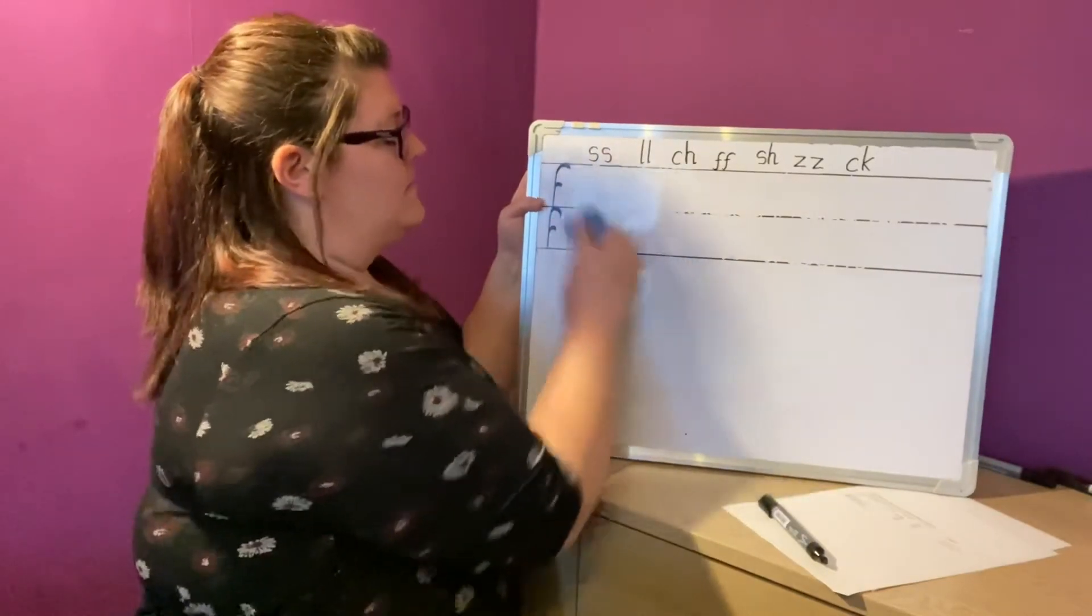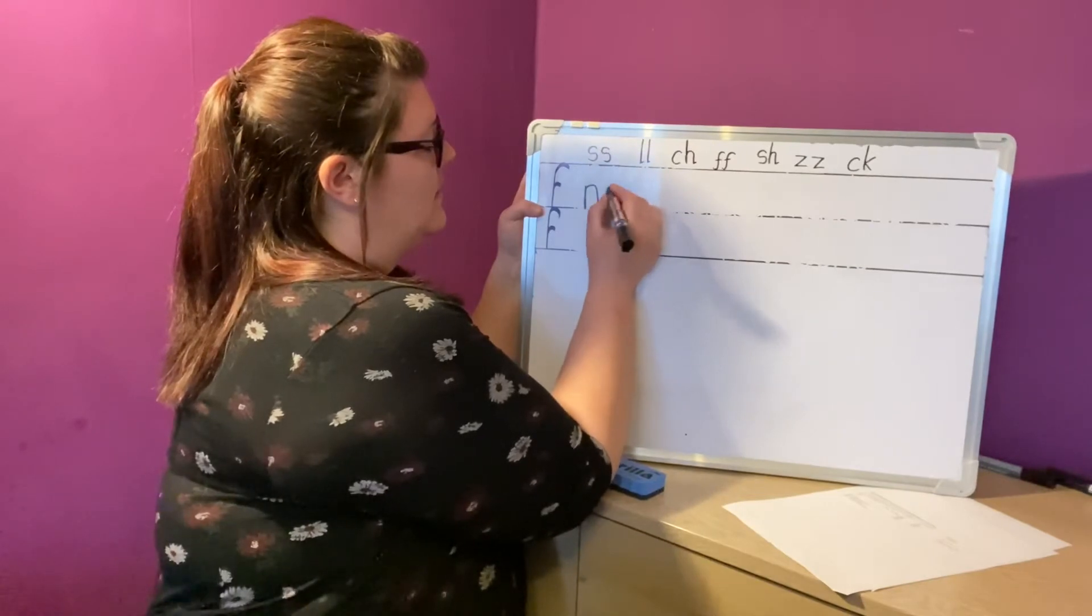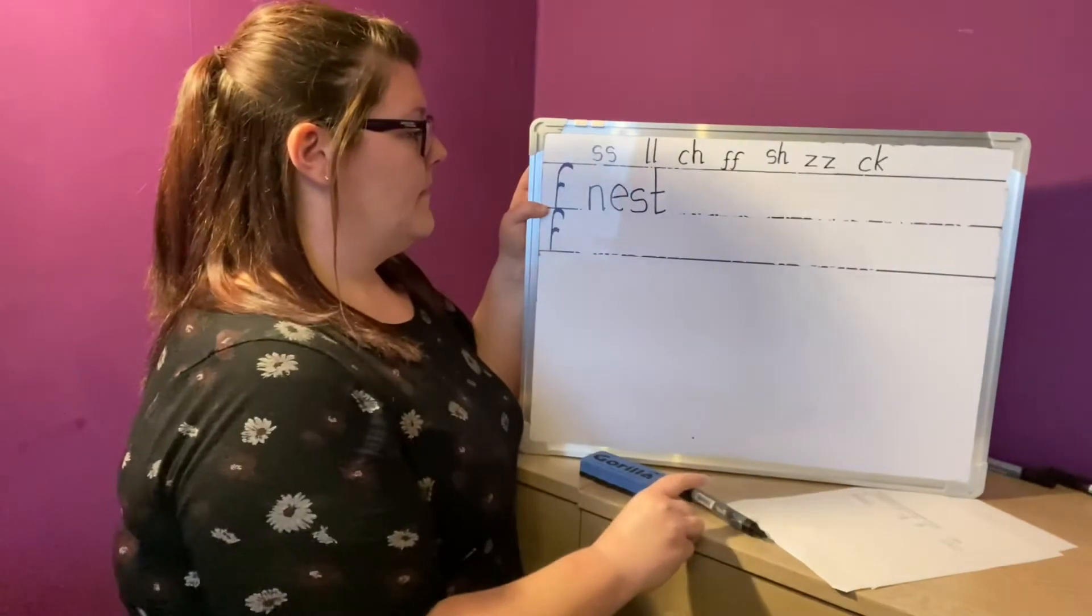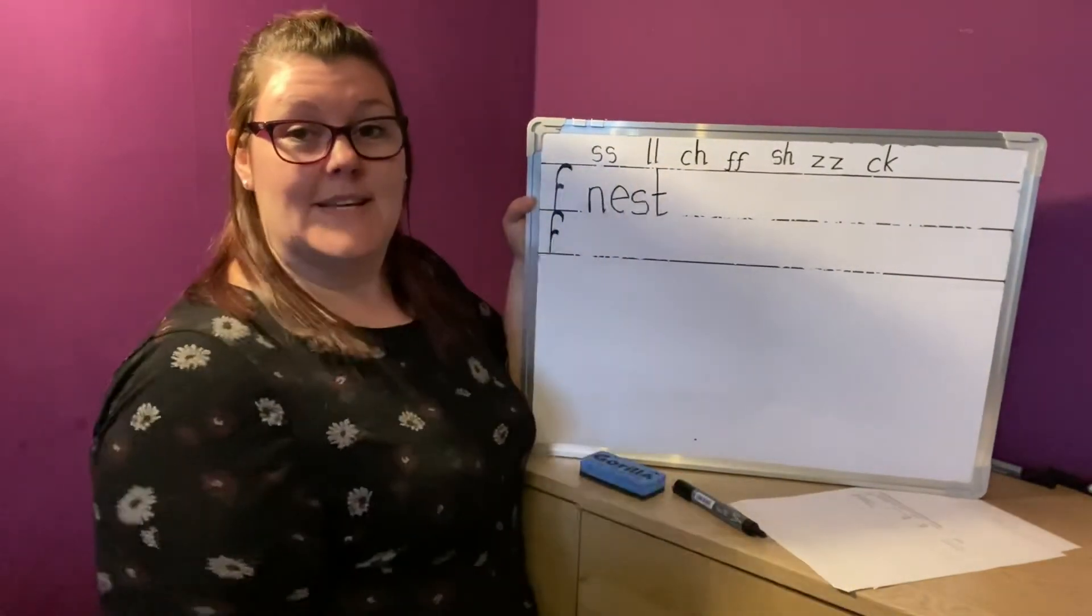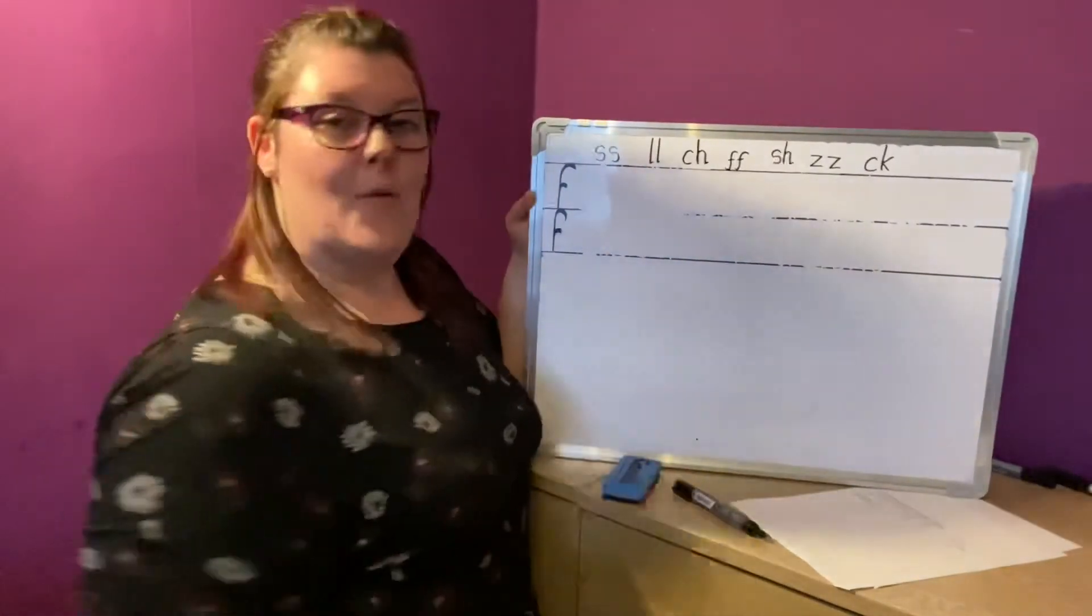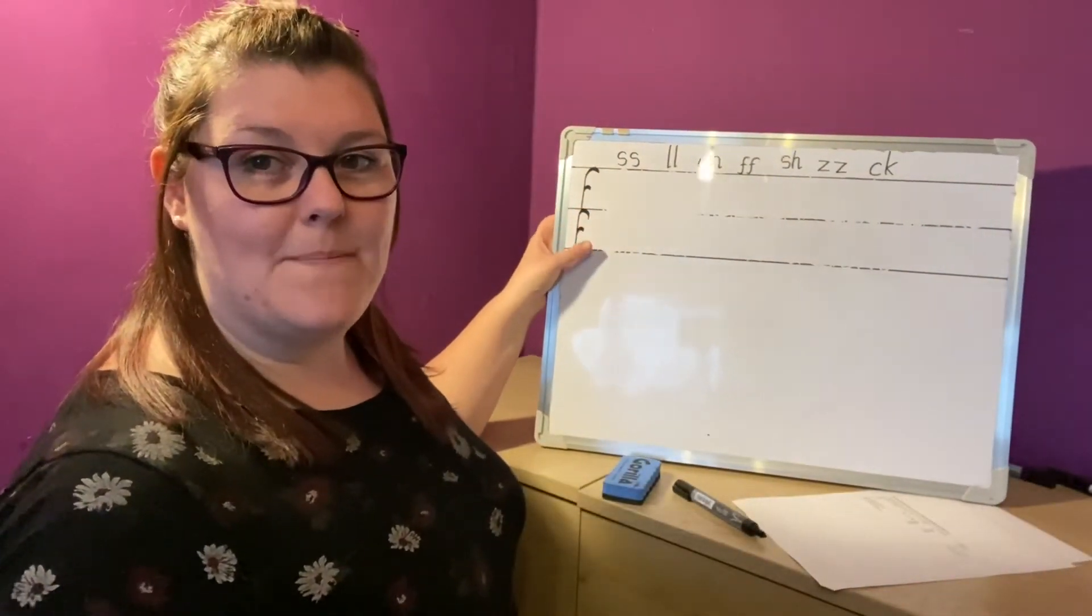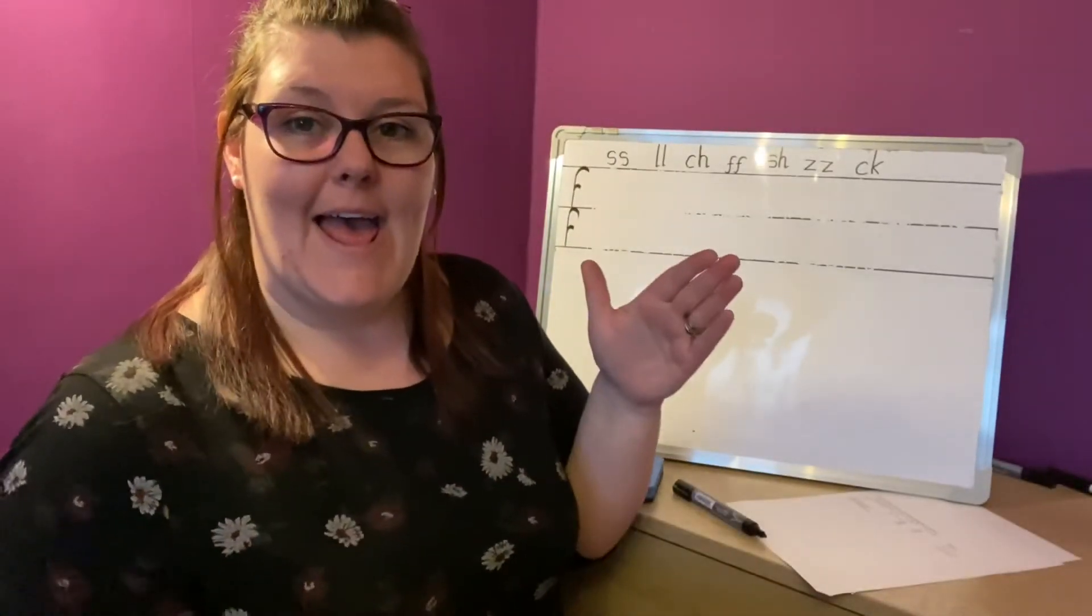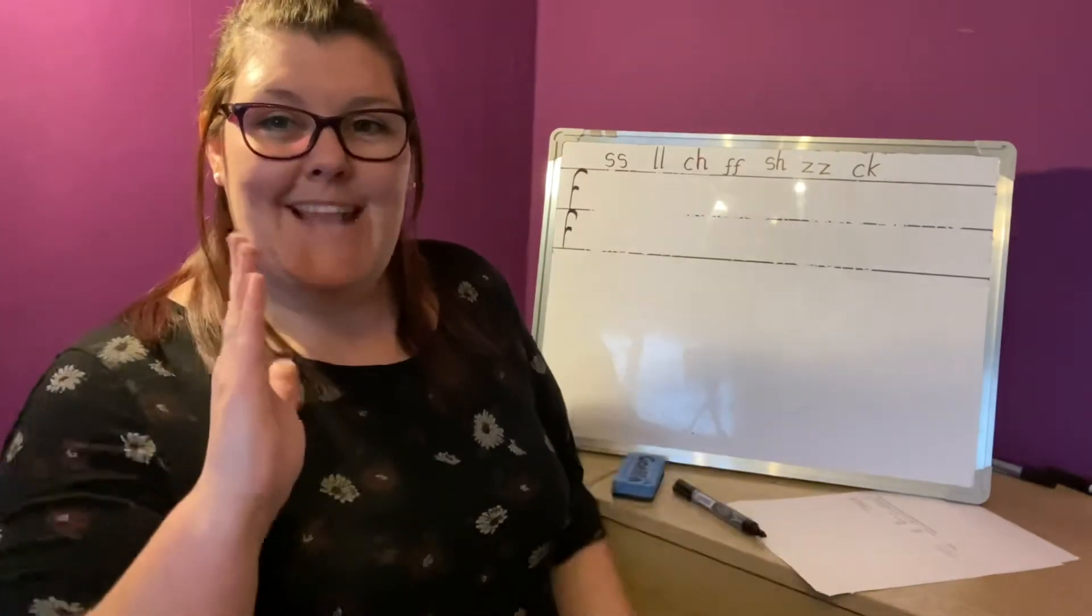Right, one more word to build and then it's sentence time. Okay, I've just written it for you. What's the word? Nest. Well done. Now I'm going to rub it out. I want you to segment it. Nest. Segment it. Nest. Well done.